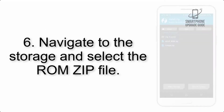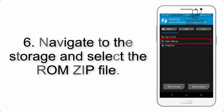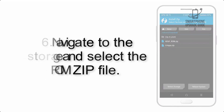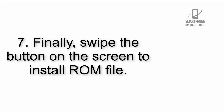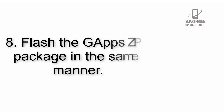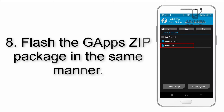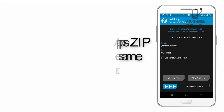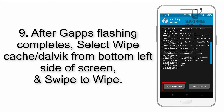Step 5: go back to the recovery main screen and tap on the Install button. Step 6: navigate to the storage and select the ROM zip file. Step 7: finally, swipe the button on the screen to install the ROM file.